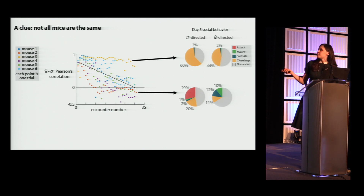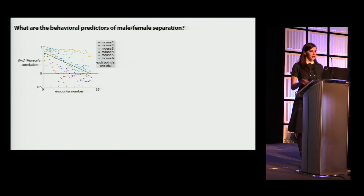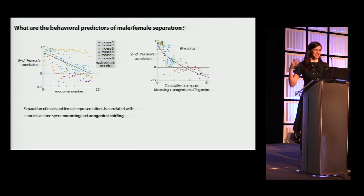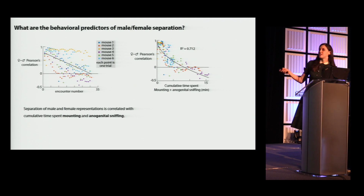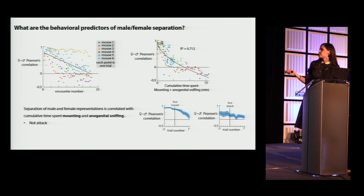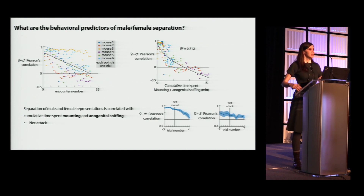We regressed this measure of male-female representation separation against various behavioral measures. Cumulative time spent interacting with conspecifics was not a good predictor of separation. However, plotting separation against cumulative time spent mounting and anogenital sniffing — a precursor behavior to mounting — revealed a very clear correlation between how separated the representations are and the animal's cumulative sexual experience. Interestingly, even though VMHVL is involved in attack, attack was not predictive of separation. In fact, attack tended not to appear until representations were already separated.